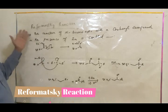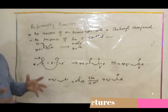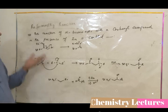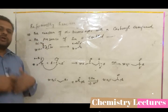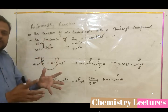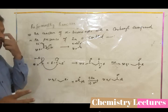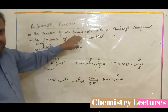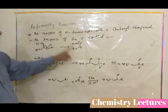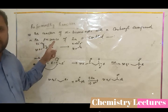Now we will discuss another type of reaction called the Reformatsky reaction. The Reformatsky reaction is not a condensation reaction, but it is also used to form a carbon-carbon bond and is very similar to condensation reactions. It is important to remember that this reaction is not a base-catalyzed condensation reaction. In the Reformatsky reaction, an alpha-bromo ester — that is, an ester which contains bromine on the alpha carbon — reacts with an aldehyde or ketone in the presence of zinc.